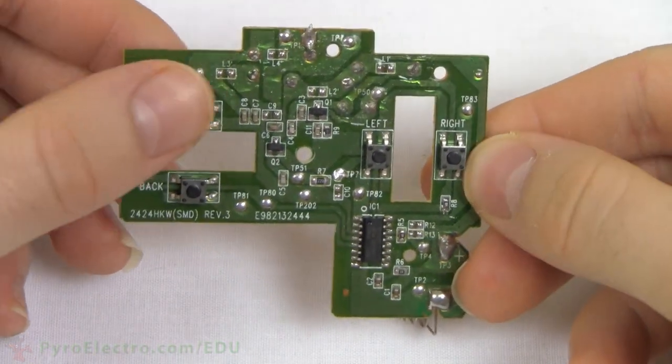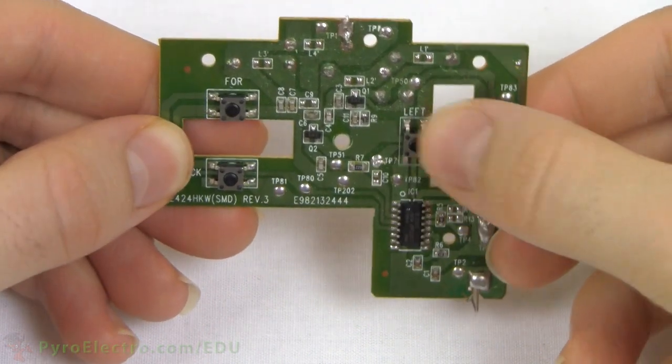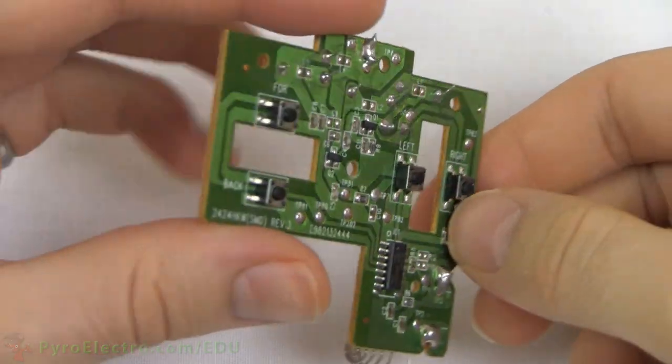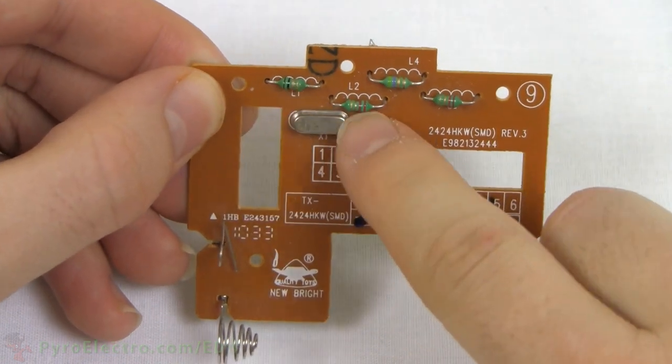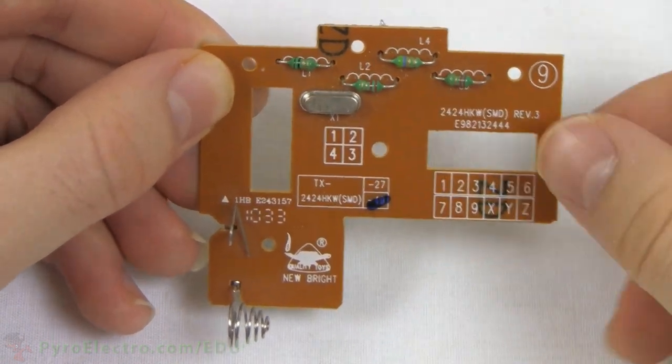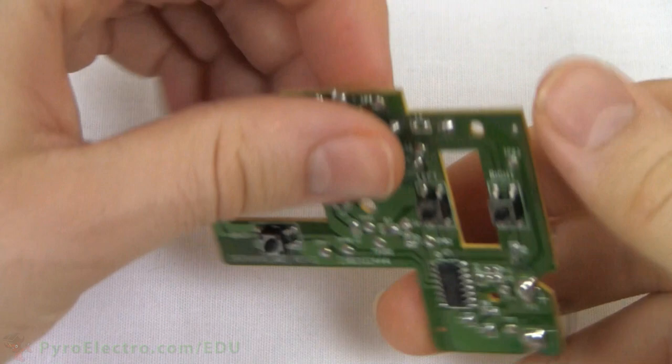Looking at one more example, here is a remote control for an RC car. If we take a look inside, there are through-hole inductors near the antenna. These inductors actually have color labels, so we can tell what their inductance values are.